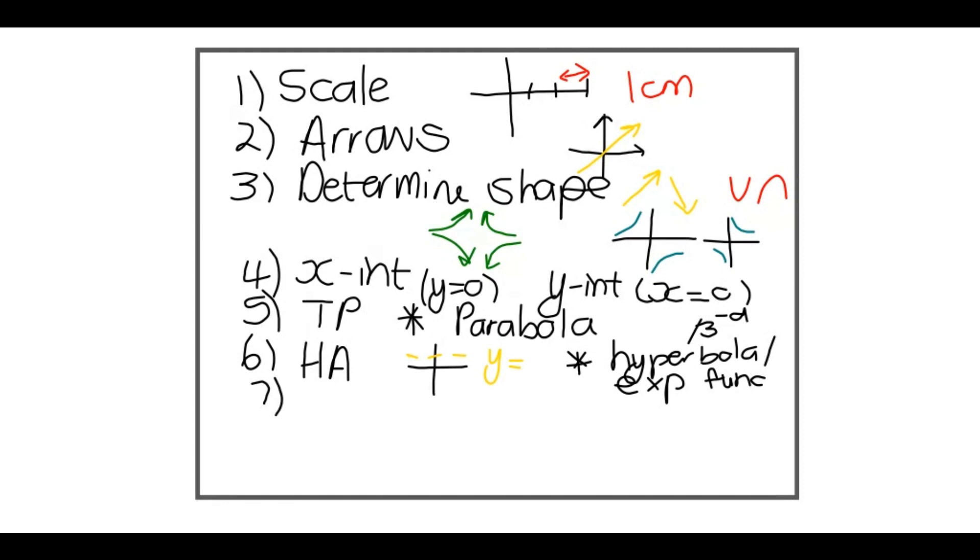Then the seventh thing, you guessed it, the vertical asymptote is next on the list. Once again, if I have a Cartesian plane, it's going to be a vertical line, x equals what? This only works for the hyperbola. That's the only function where you're going to look for a vertical asymptote. And this will also help you draw the function.